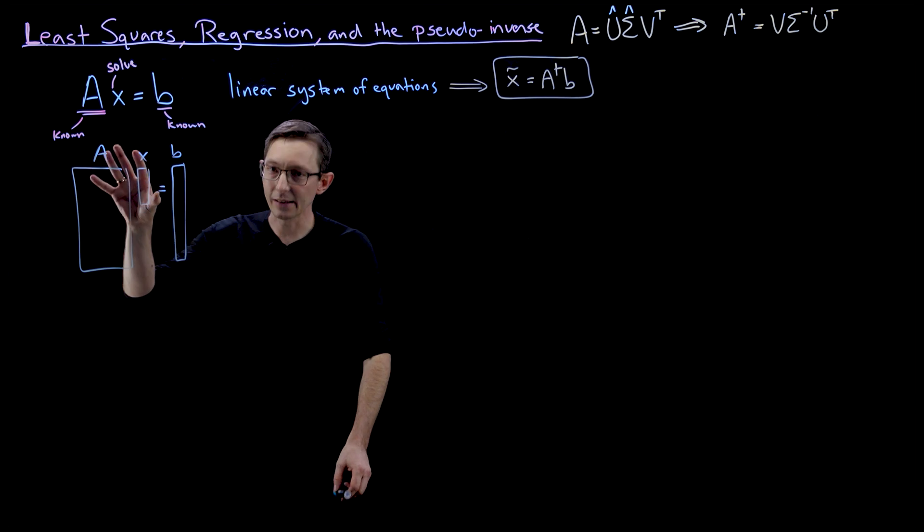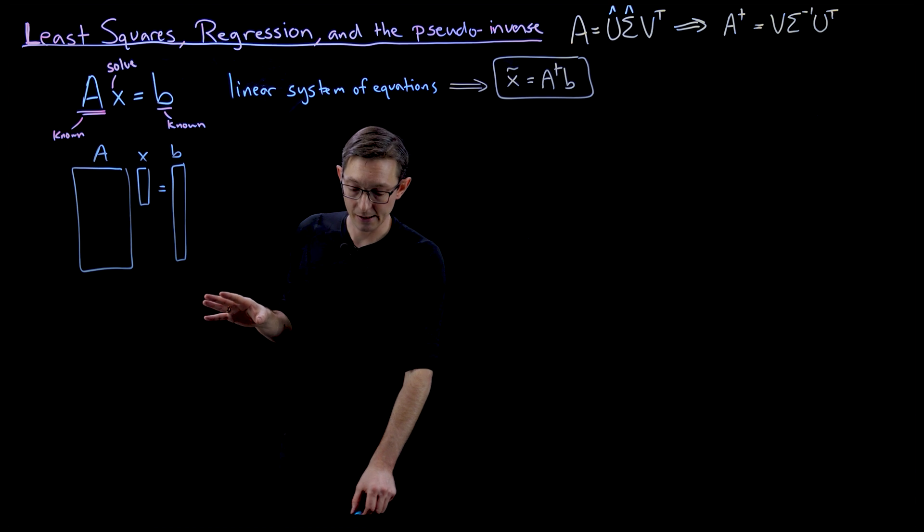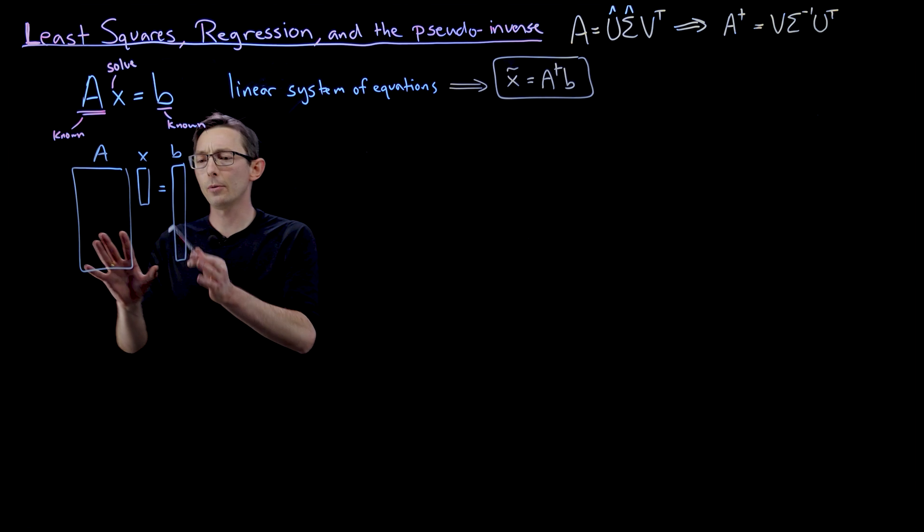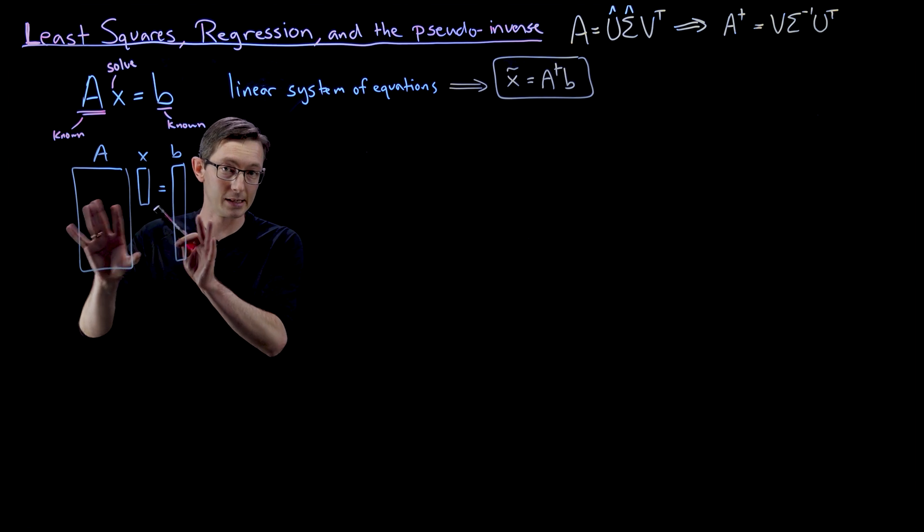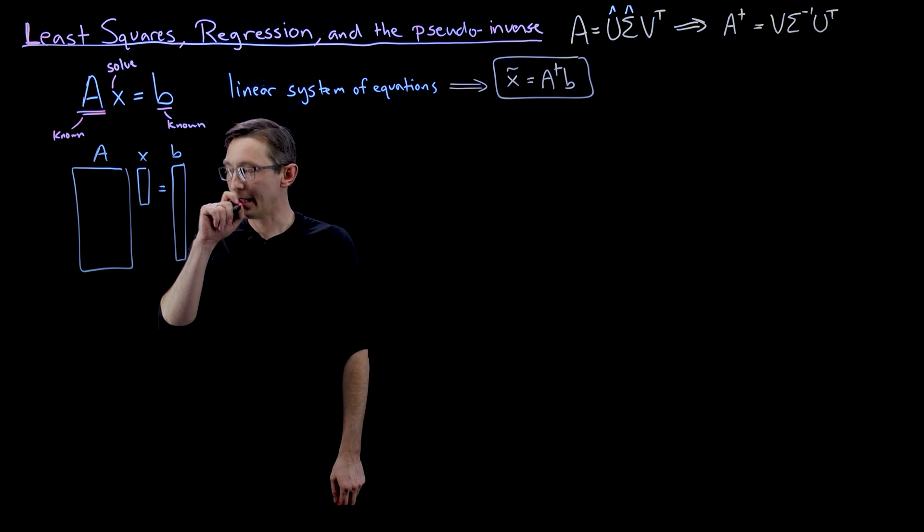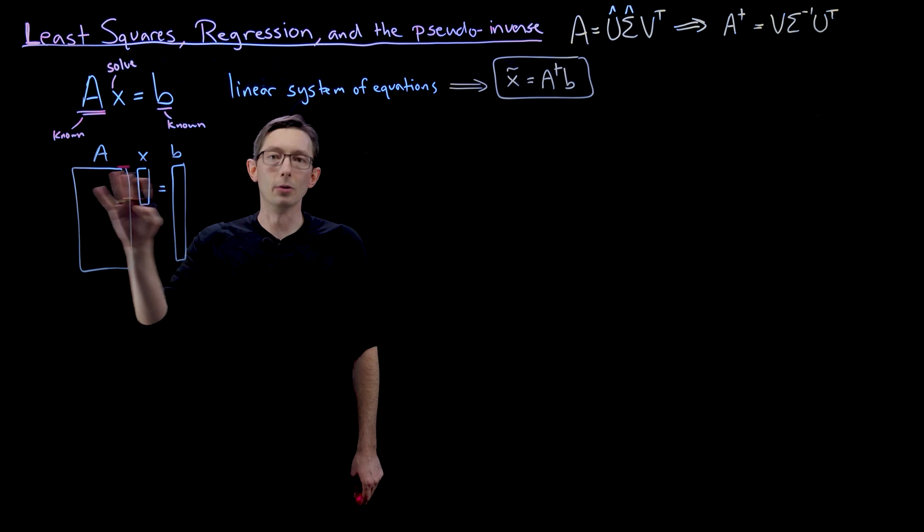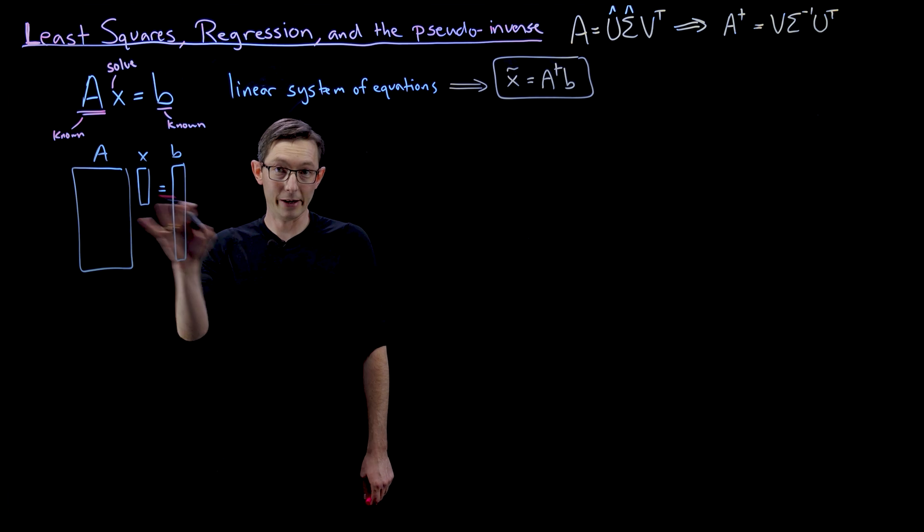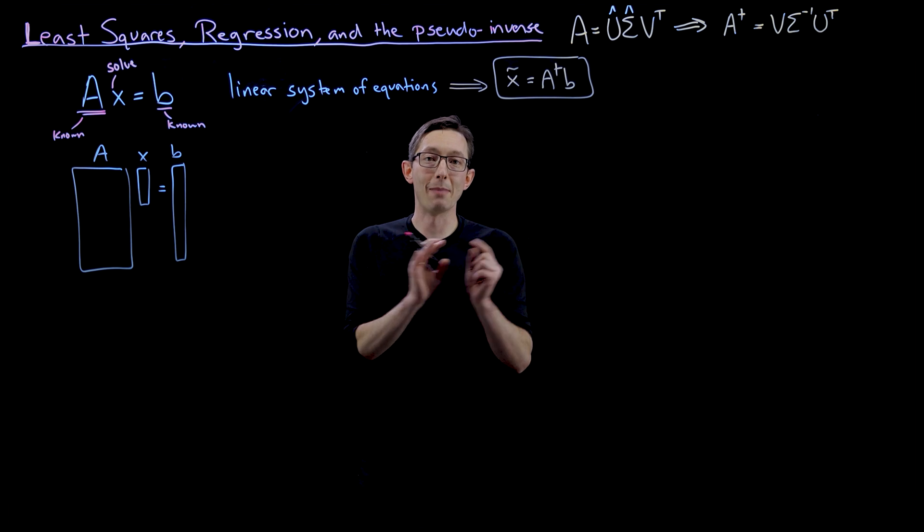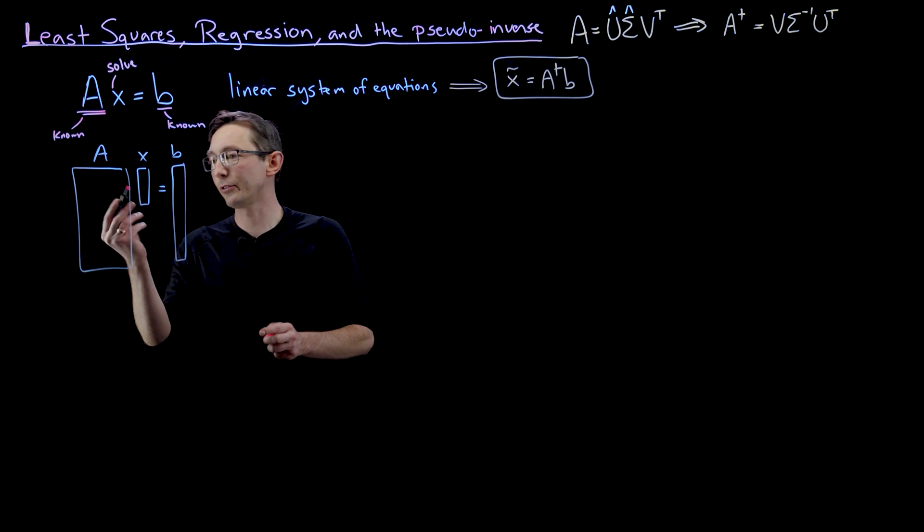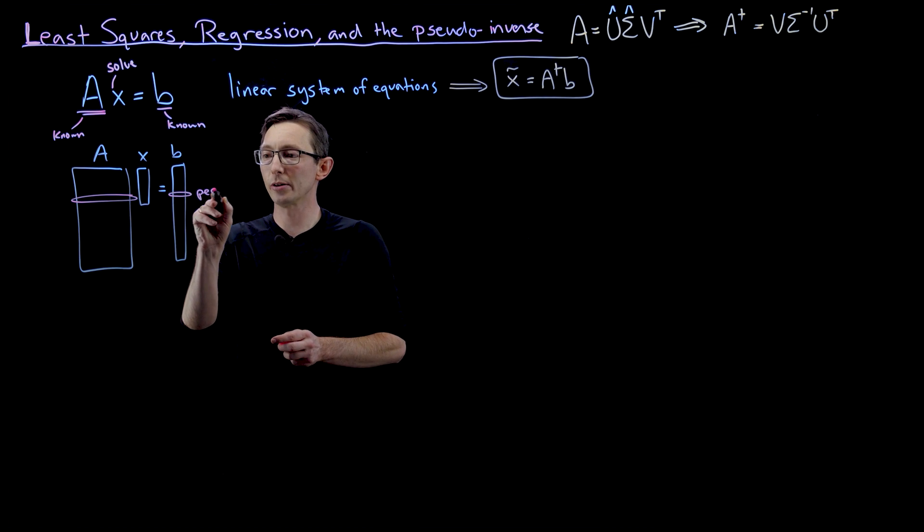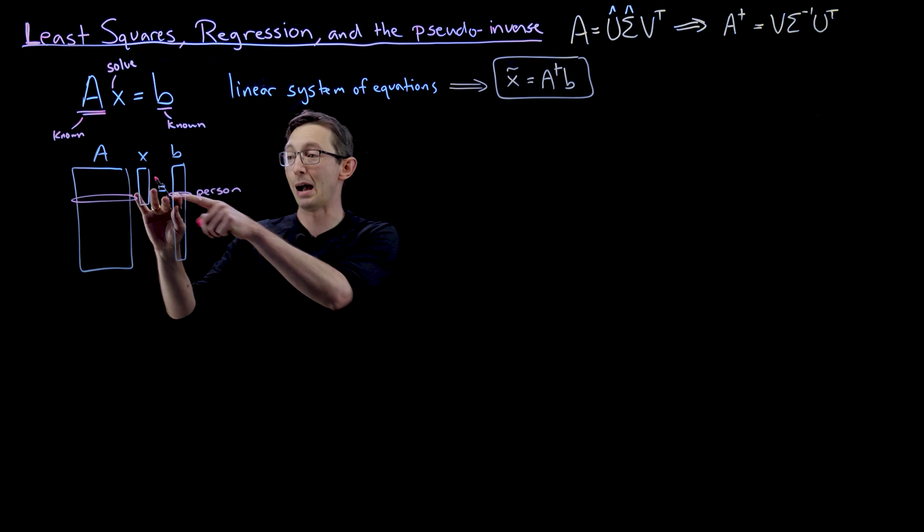I do this in the overdetermined case because oftentimes that's what we have in modern data examples. So I want to walk through a very concrete example of what this regression model might be. Let's say that every row of this, every row equation is based on data from an individual human's medical history. So every row is an individual person. This is, let's say this is my row.